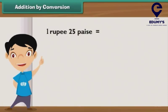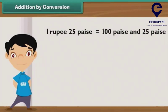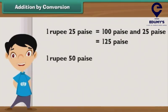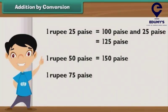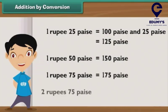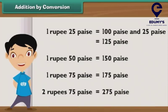So, 1 rupee 25 paisae is the same as 100 paisae and 25 paisae, that is 125 paisae. By the same logic, 1 rupee 50 paisae is equal to 150 paisae. 1 rupee 75 paisae may also be represented as 175 paisae, and 2 rupees 75 paisae is equal to 275 paisae.